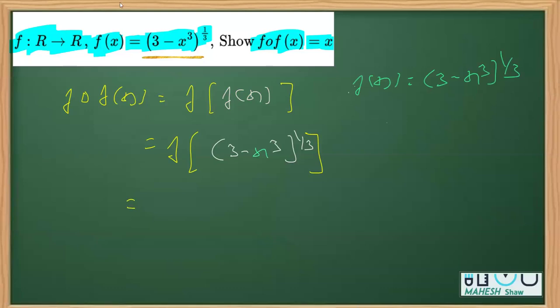This is 3 minus, and as I said, this x will be replaced with (3 - x³)^(1/3).